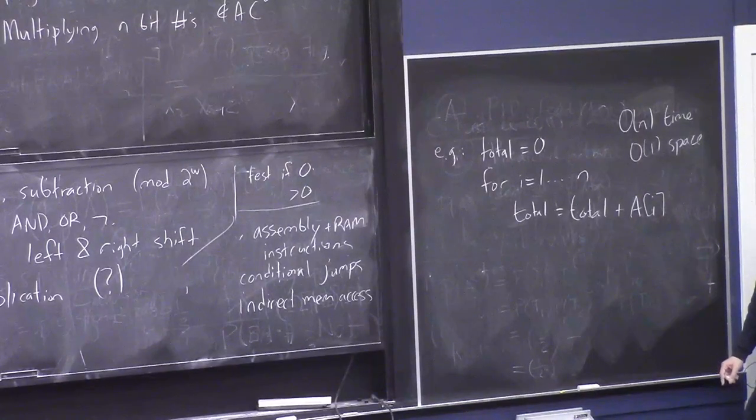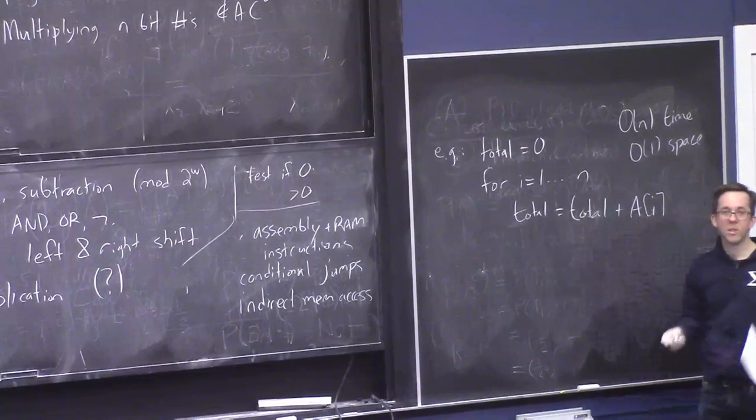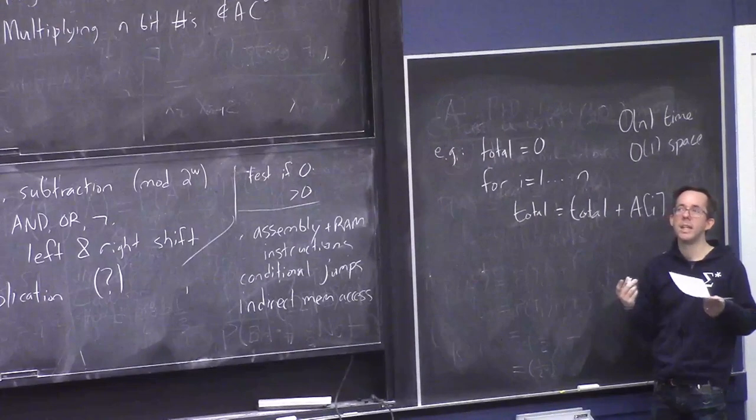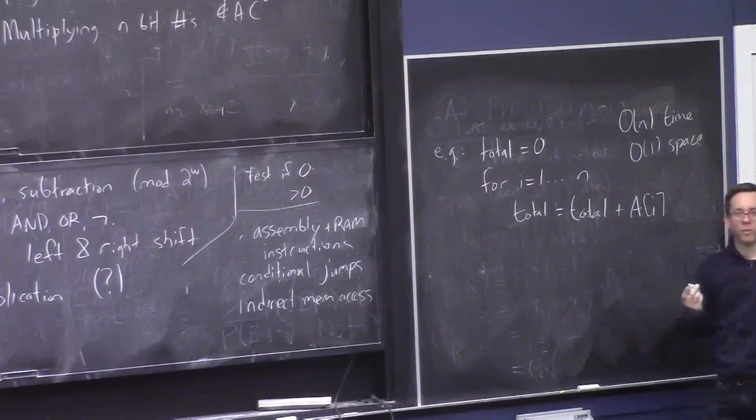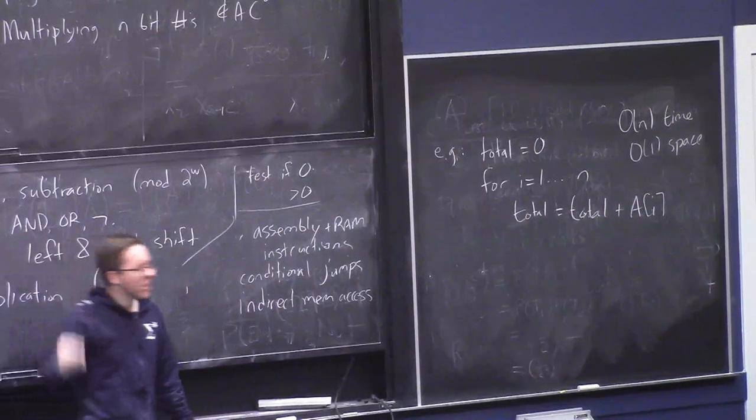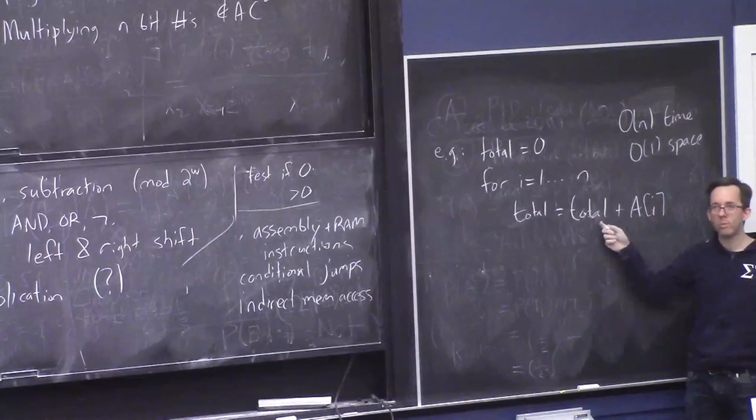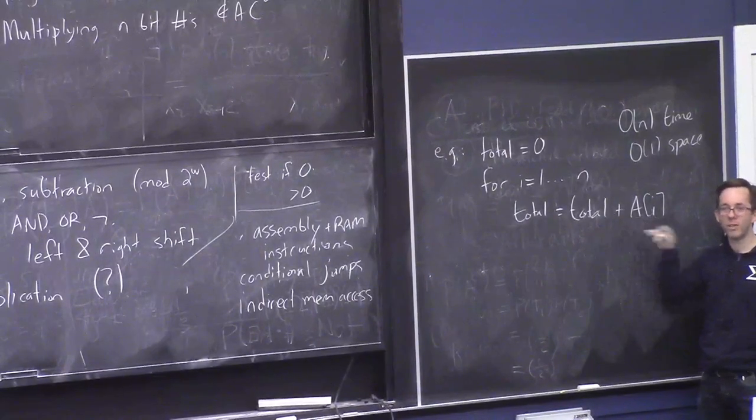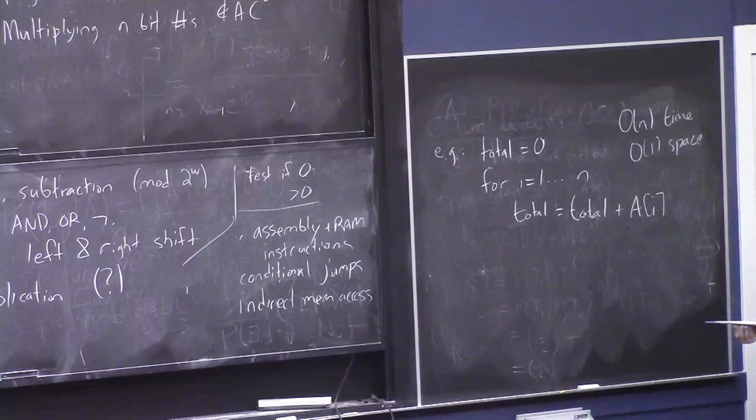So, you need like one word to store like i, and incrementing i implicitly in this loop takes time one, and the go-to to do the loop takes time one. This addition, actually, we'll come back to the addition in a second. This memory access takes time one. One thing you may notice, if you're getting really stickler, these words, if they're w bits, are storing integers between zero and two to the w. So, the final sum could actually be n times two to the w, which would need, the log of that is like w plus log n bits.